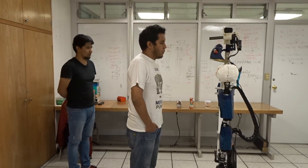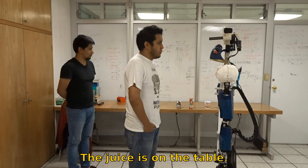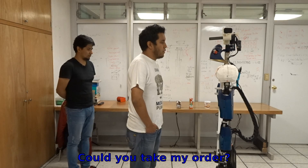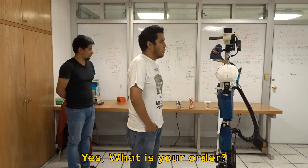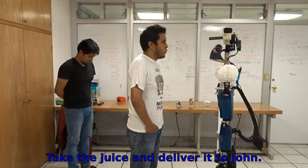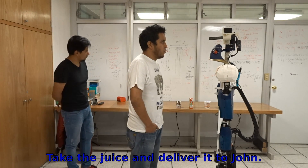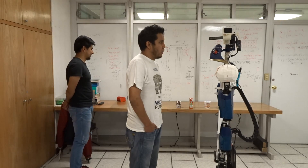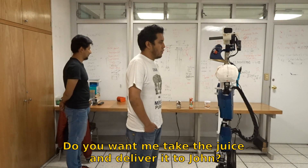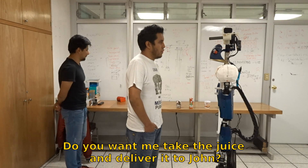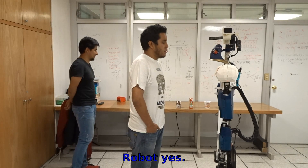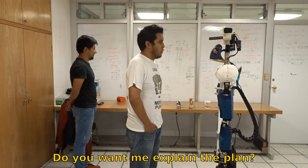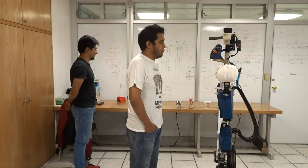Where is the juice? The juice is on the table. Could you take my order? Yes, what is your order? Take the juice and deliver it to John. Do you want me to take the juice and deliver it to John? Yes. Do you want me to explain the plan? Explain the plan.